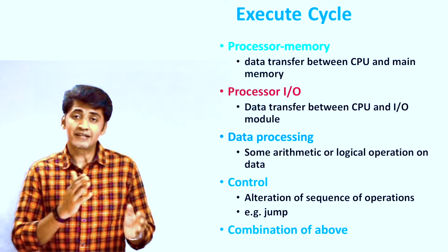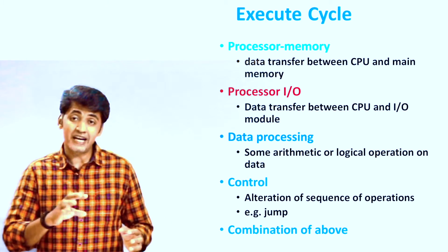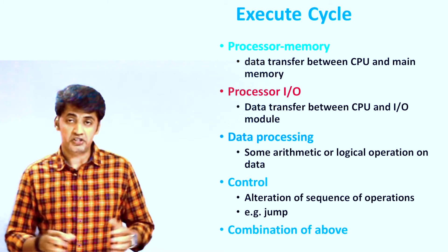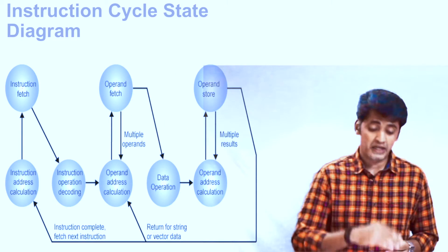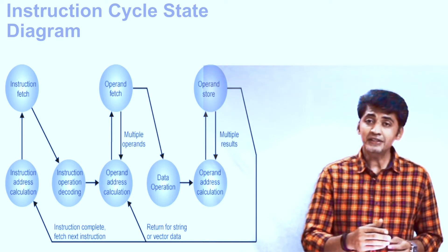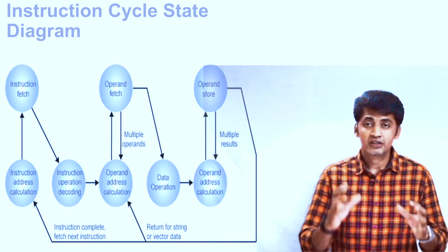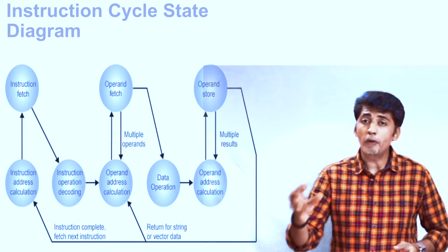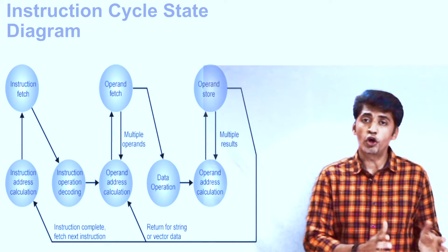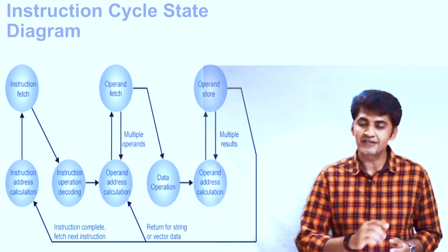Next we are going to see the instruction cycle state diagram — what states are available and what operations occur in each state. The first step is instruction address calculation. After that, instruction fetch happens. Then the instruction is decoded into its operand and operation. After instruction decode, the next step is operand address calculation — the address of the operands needed for the operation must be calculated. That is the fourth step.